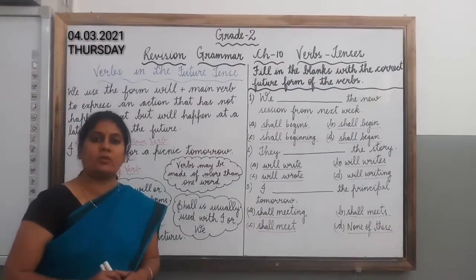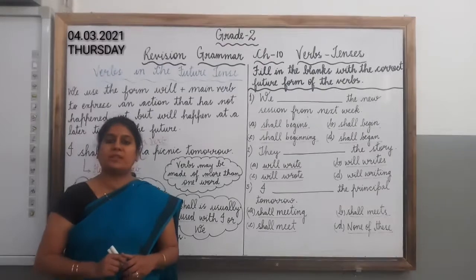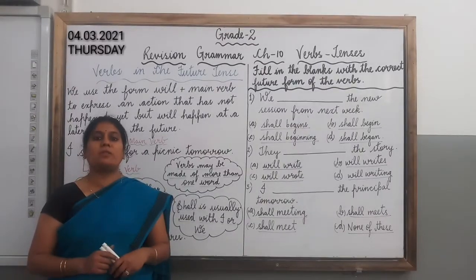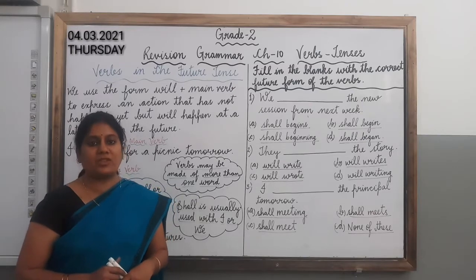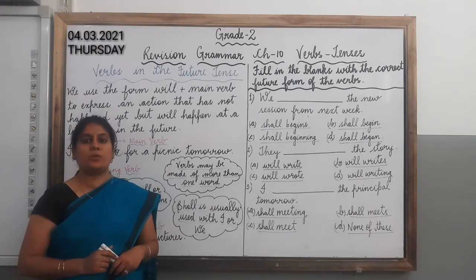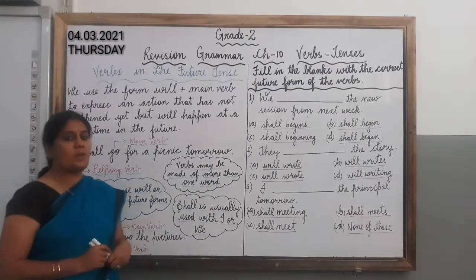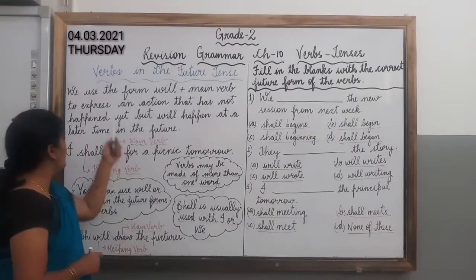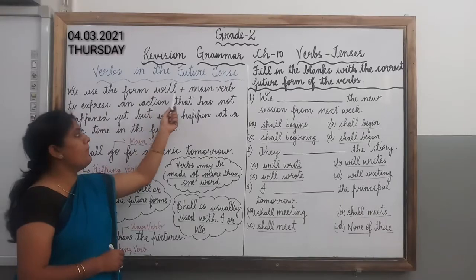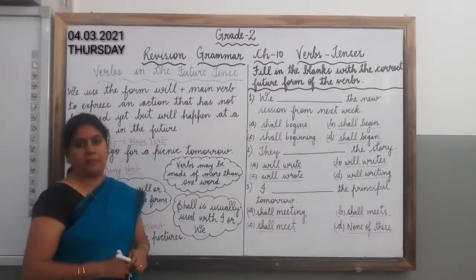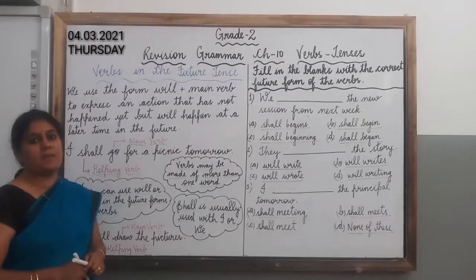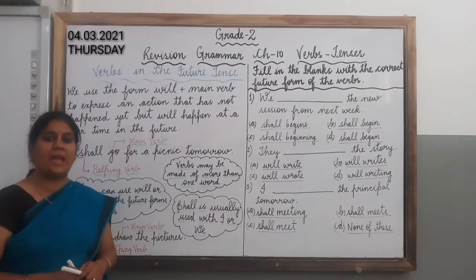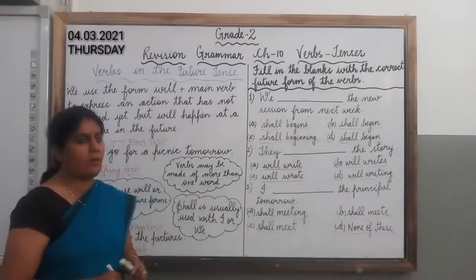Children, you all must be knowing what is the meaning of future tense. Future tense means we are talking about the future type — the actions which will be done in the future. So let's understand verbs in the future tense. We use the form 'will' plus main verb, and also 'shall' plus main verb, in the future tense.